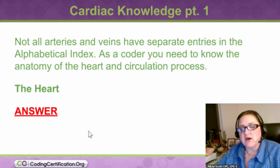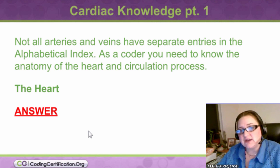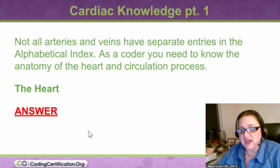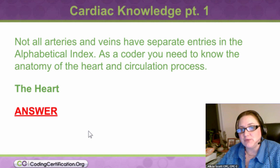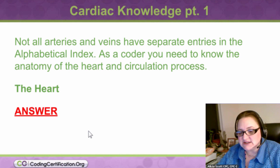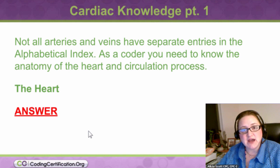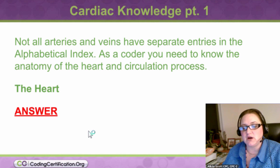This is basic, and then you can get into advanced, but it is a lot of information so I had to divide it up into two slides. The first thing is that not all arteries and veins have separate entries in the alphabetic index. That's why you need to know the anatomy and the terminology. As a coder, you need to know the anatomy of the heart and the circulation process. If you had biology or anatomy in high school or college, you may know some of this, but you need to expand on it a little more as a coder.